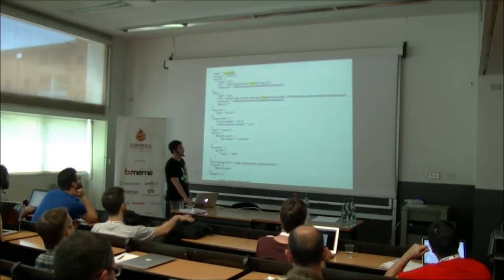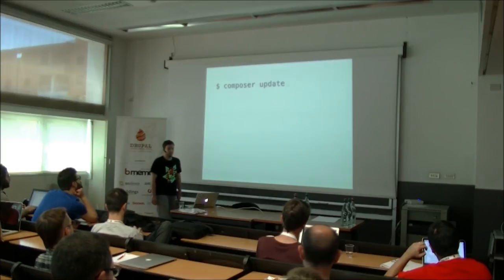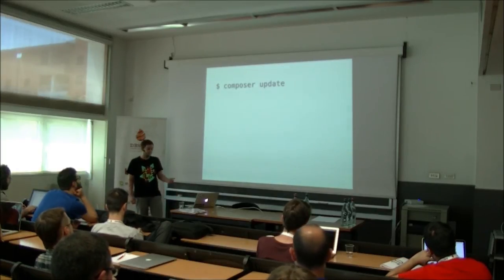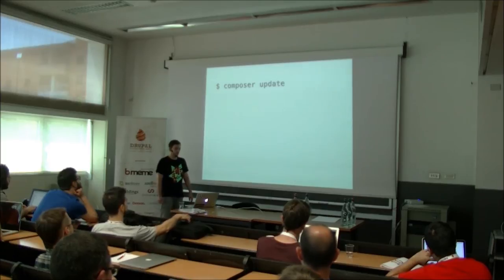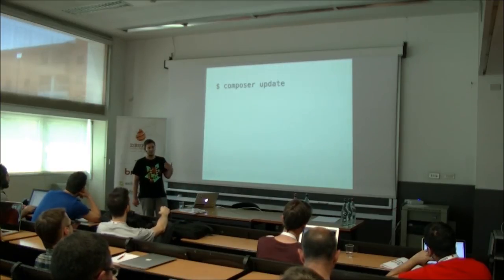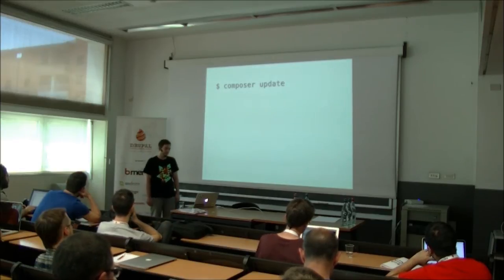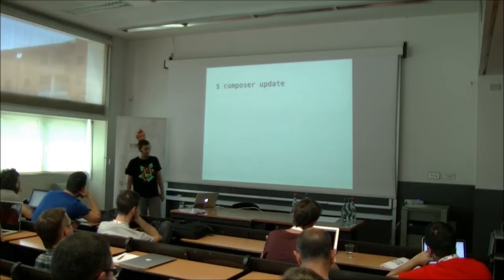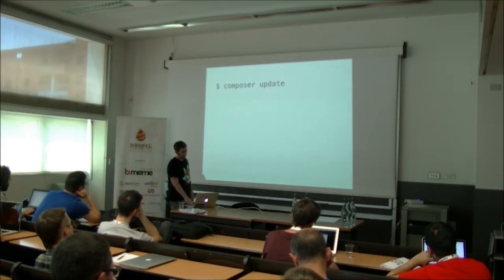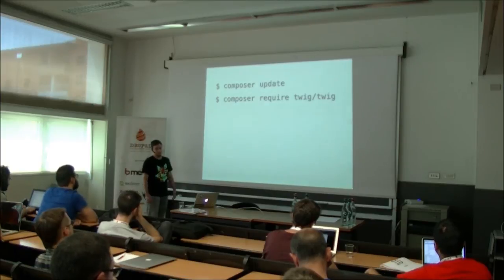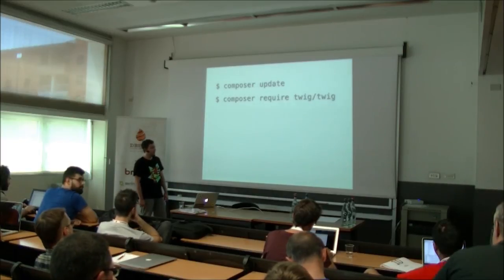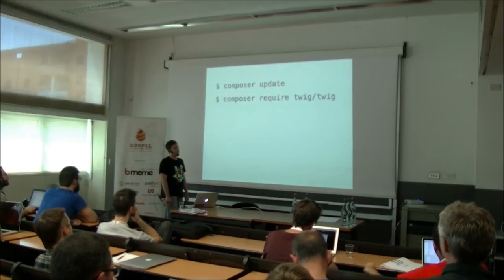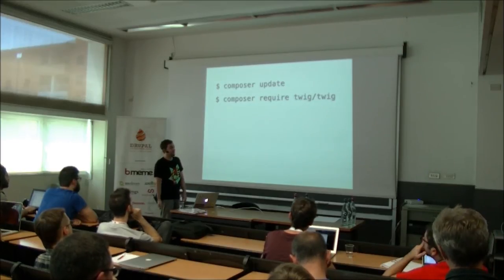There are many more commands. 'Composer update' is like 'composer install', but it ignores your lock file and updates it after installing. If you have a lock file and run 'composer install', you always get the same dependencies. If you run 'composer update', it searches for newer versions and updates both dependencies and the lock file. Then there is 'composer require' — you have a project and want to add Twig. It updates your composer.json with the new dependency, installs it, and updates the lock file.